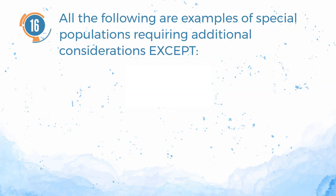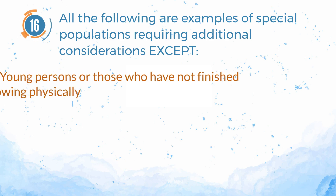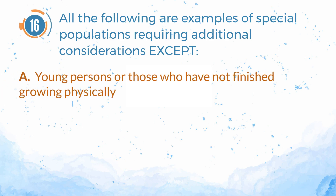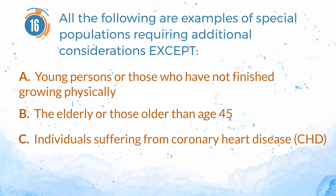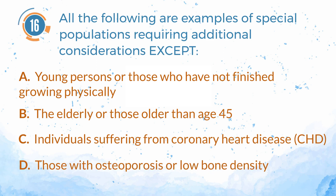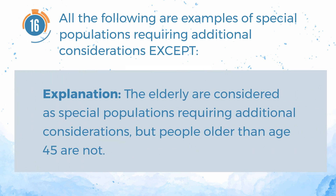Number 16. All the following are examples of special populations requiring additional considerations except: A. Young persons or those who have not finished growing physically. B. The elderly or those older than age 45. C. Individuals suffering from coronary heart disease (CHD). D. Those with osteoporosis or low bone density. The answer is B. The elderly or those older than age 45. Explanation: the elderly are considered a special population requiring additional considerations, but people older than age 45 specifically are not.